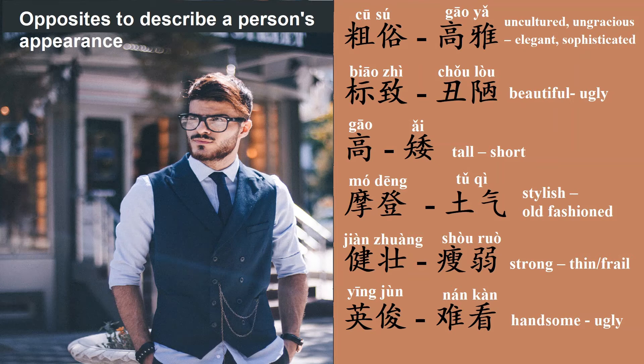健壮, strong. The opposite of 健壮 is 受弱, thin or frail. 英俊, handsome. The opposite of 英俊 is 難看, ugly.